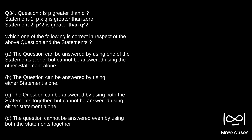Fourth option: the question cannot be answered even by using both the statements together. So we will analyze what statement one and statement two means. Statement one means p into q is greater than zero, so that means both will have the same sign — p and q will be either both greater than zero or both less than zero. With that information we cannot answer whether p is greater than q, so statement one alone cannot answer the question.